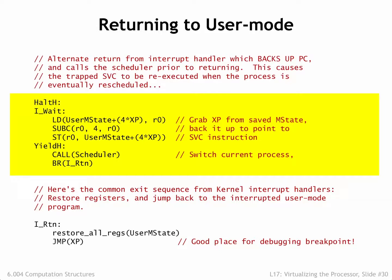There are times when the SVC request cannot be completed and should be retried in the future. For example, the read-ch supervisor call returns the next character typed by the user, but if no character has yet been typed, the OS cannot complete the request at this time. In this case, the SVC handler should branch to I-wait, which arranges for the SVC instruction to be re-executed next time this process runs, and then calls the scheduler to run the next process. This gives all the other processes a chance to run before the SVC is tried again, hopefully this time successfully.